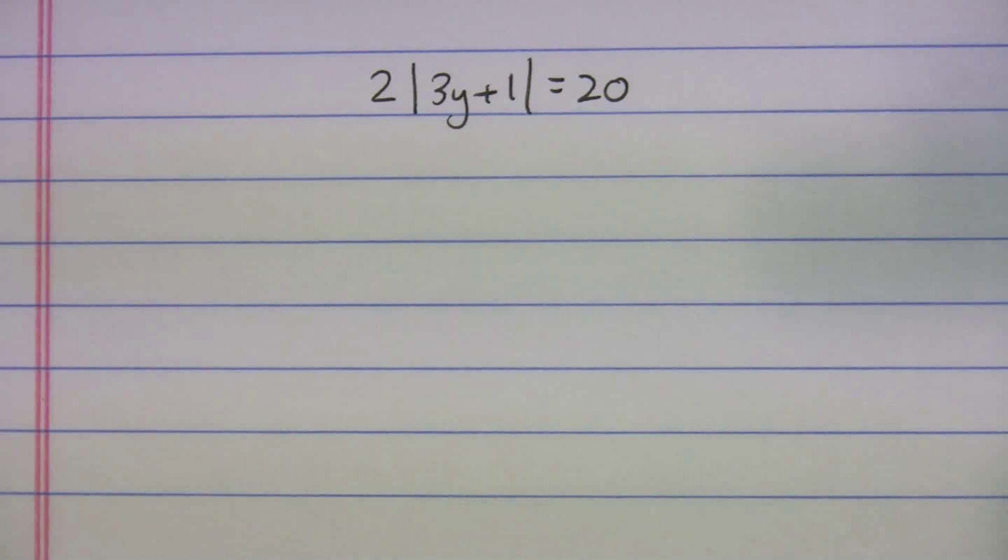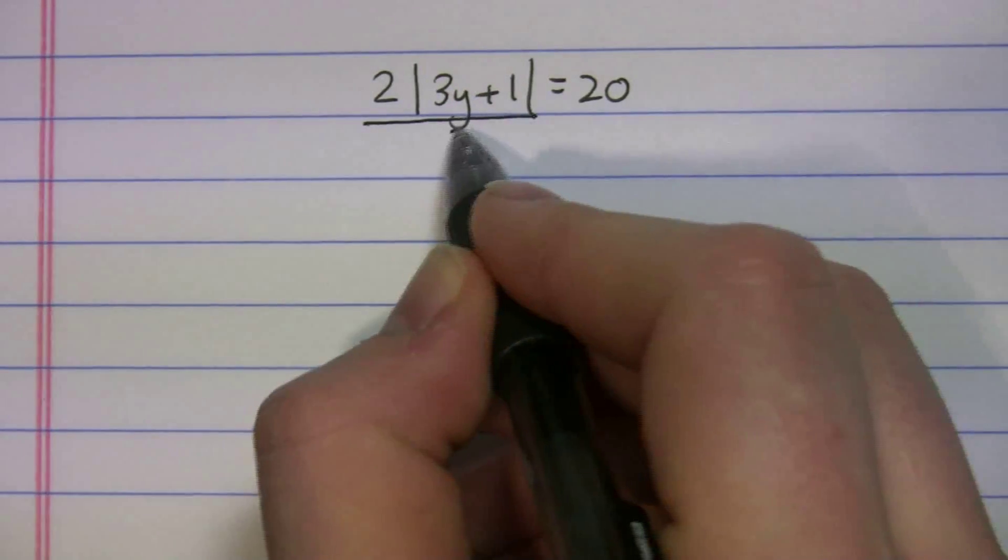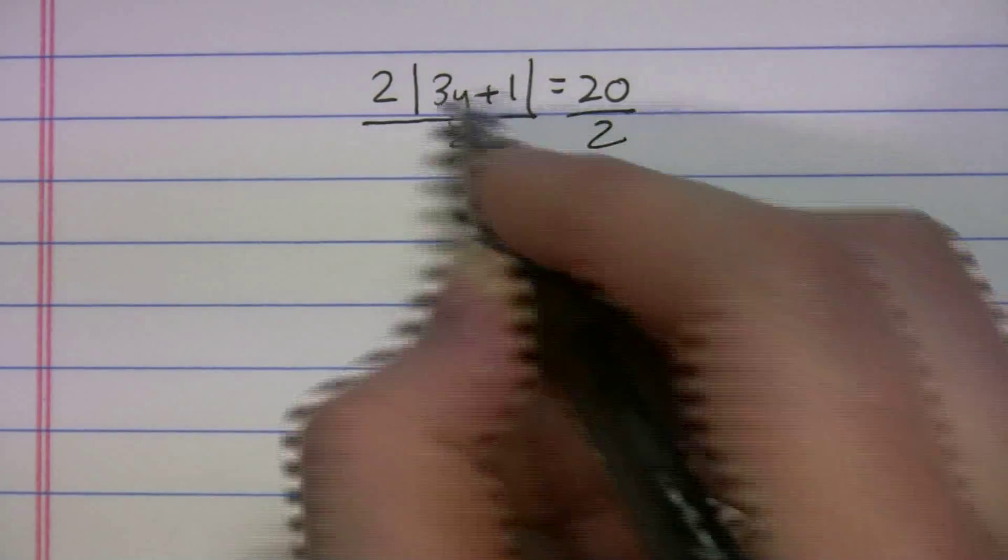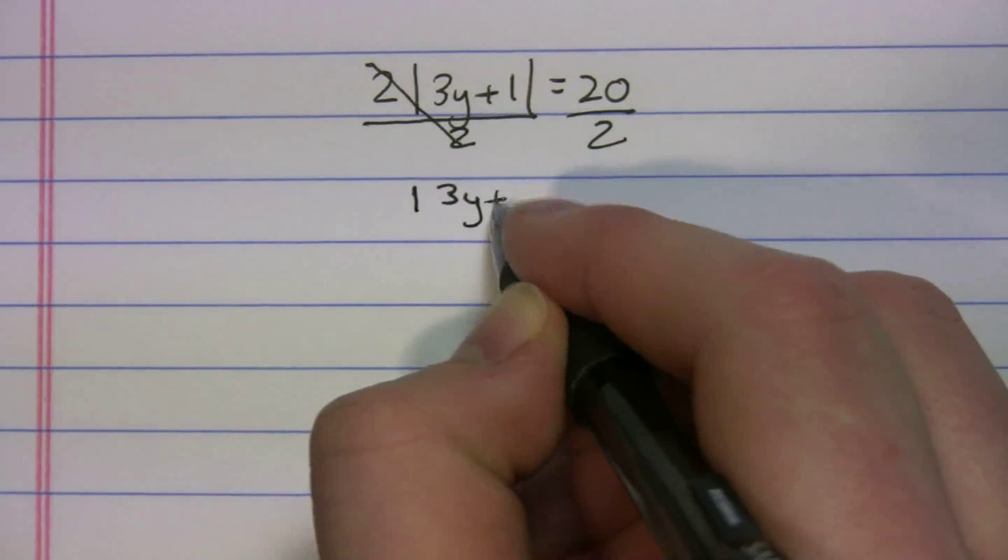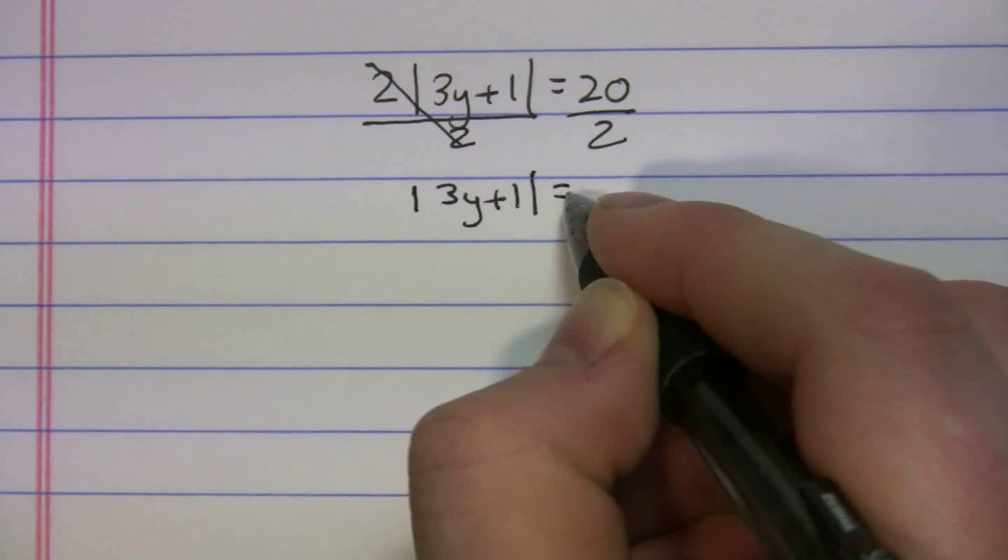So now we have 2 times the absolute value of 3y + 1 is equal to 20. First thing I'm going to do, I'm going to get rid of this 2. So now I have the absolute value of 3y + 1 is equal to 10.